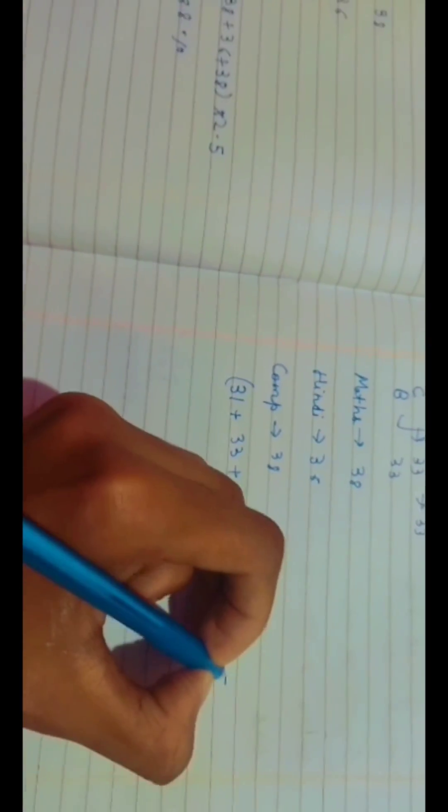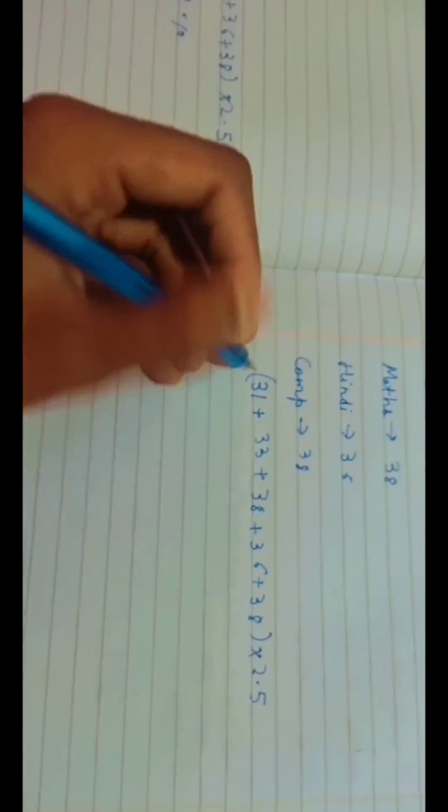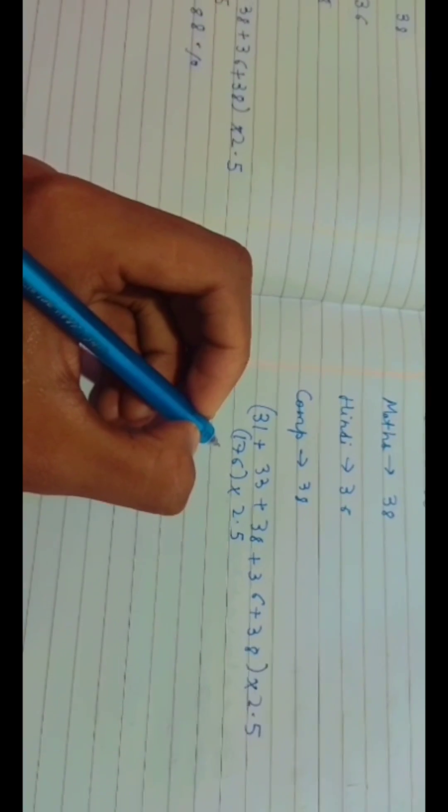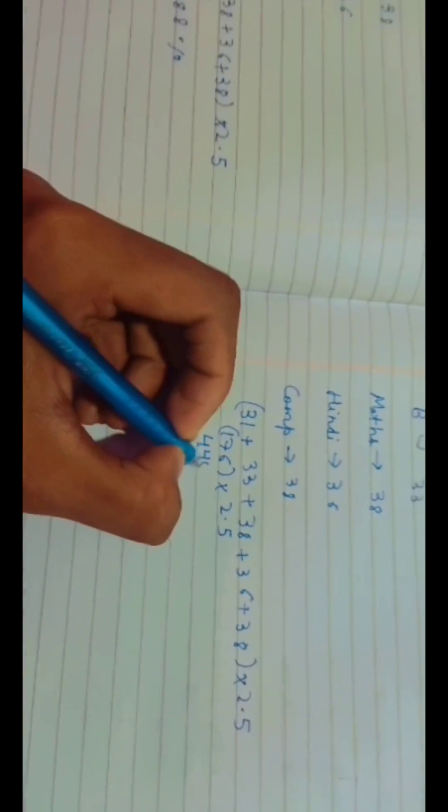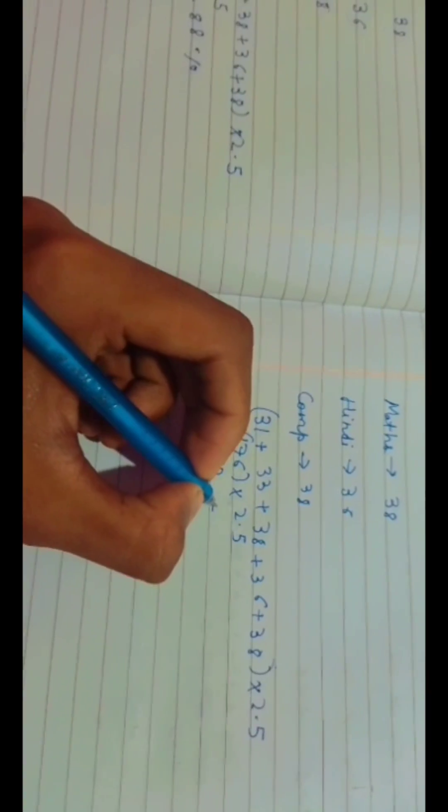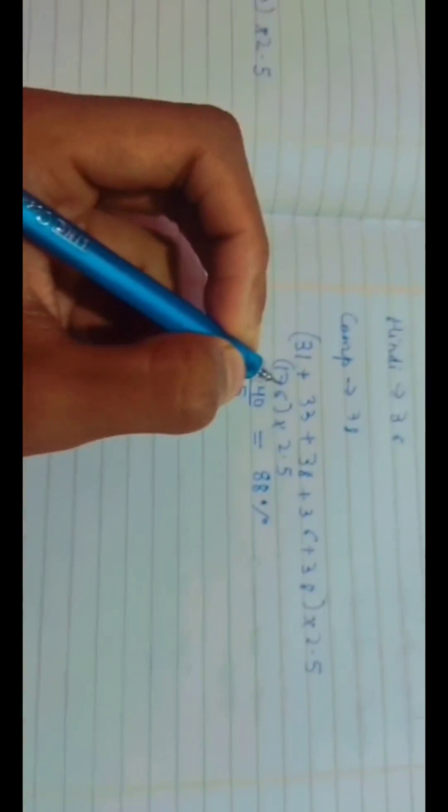So what we do, we want to 176 into 2.5. It's coming 440. Now as we are taking top 5, we should divide it by top 5, I mean 5 subjects - 5. So it's coming 88 percent. This was the way how to calculate I-10 semester one result.